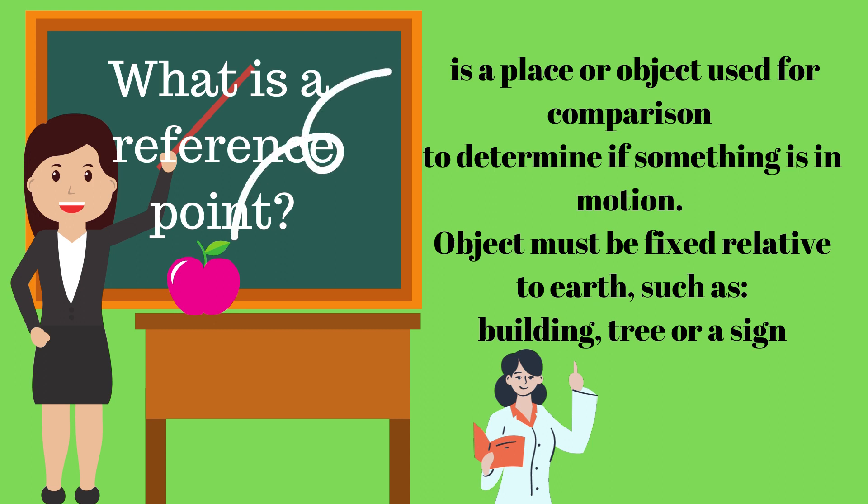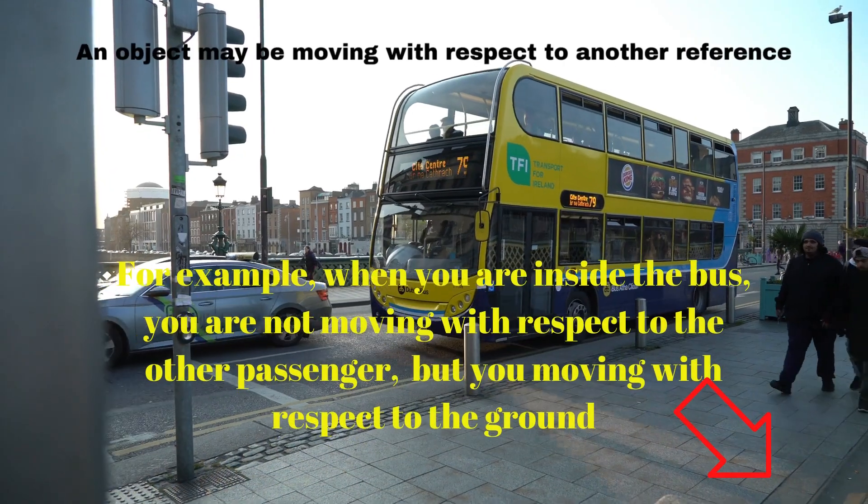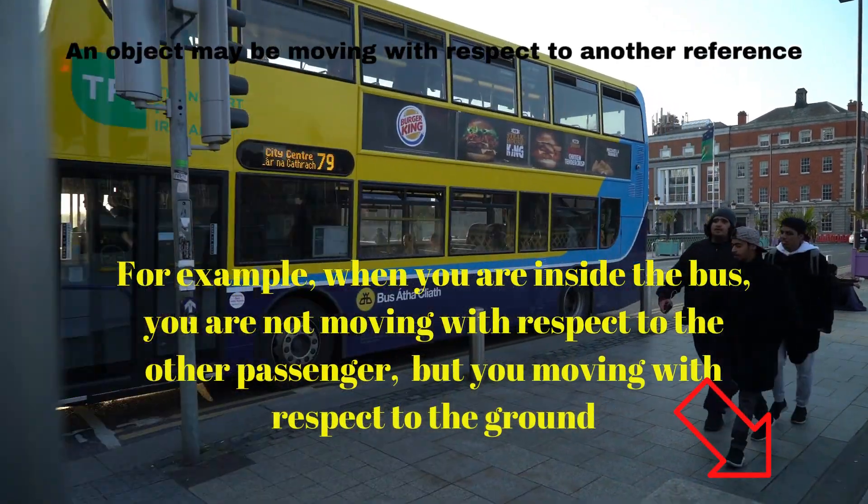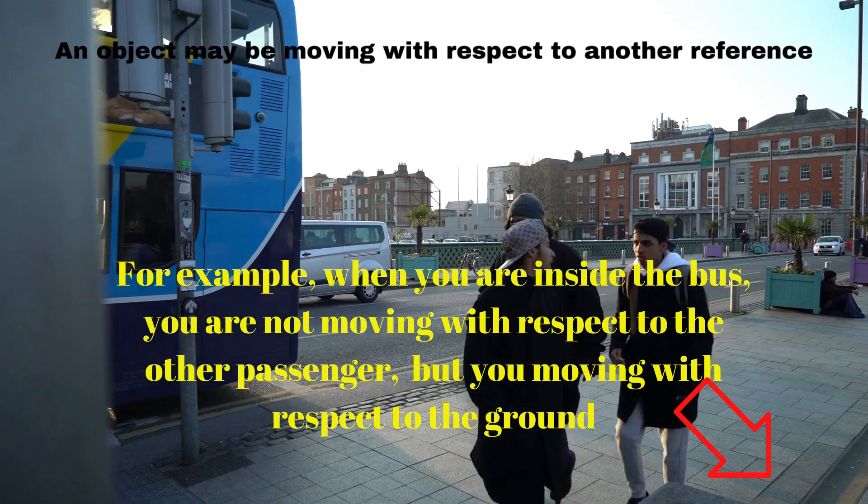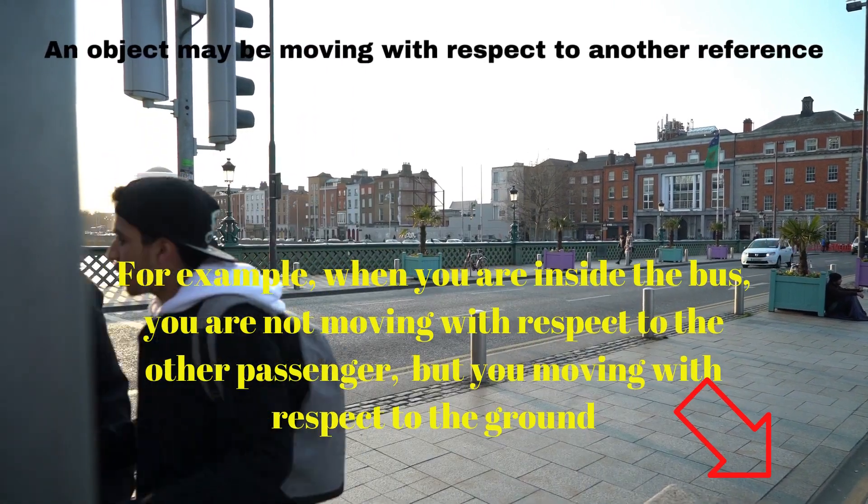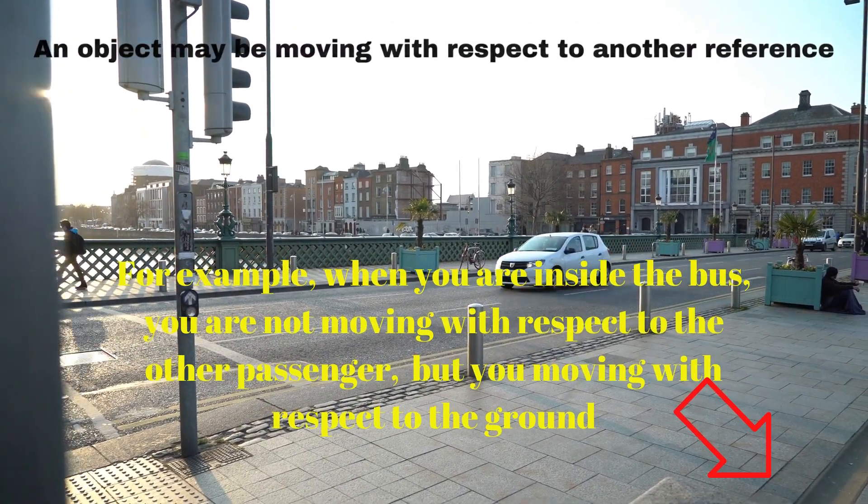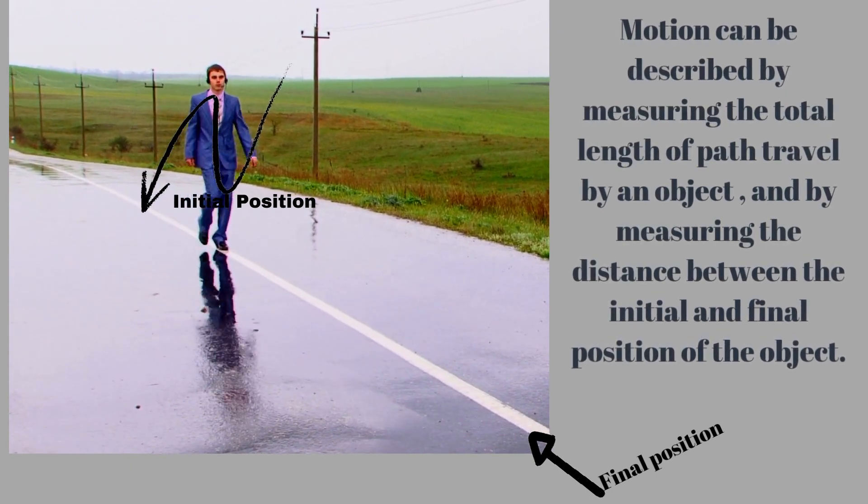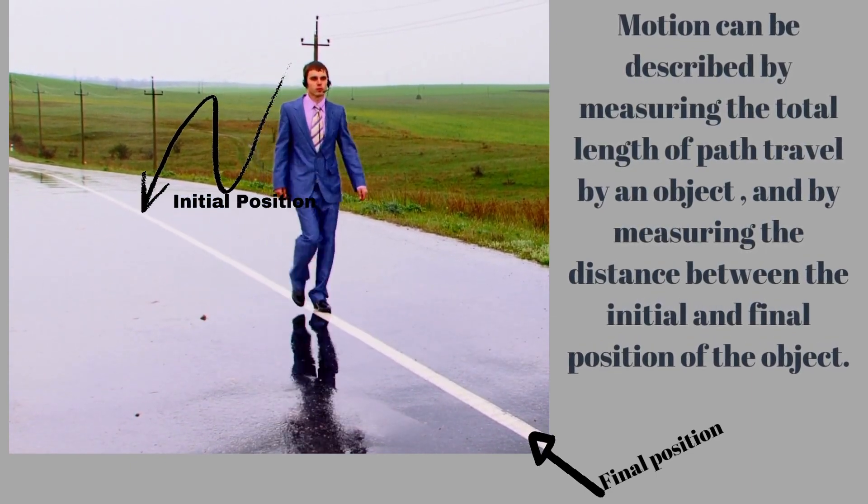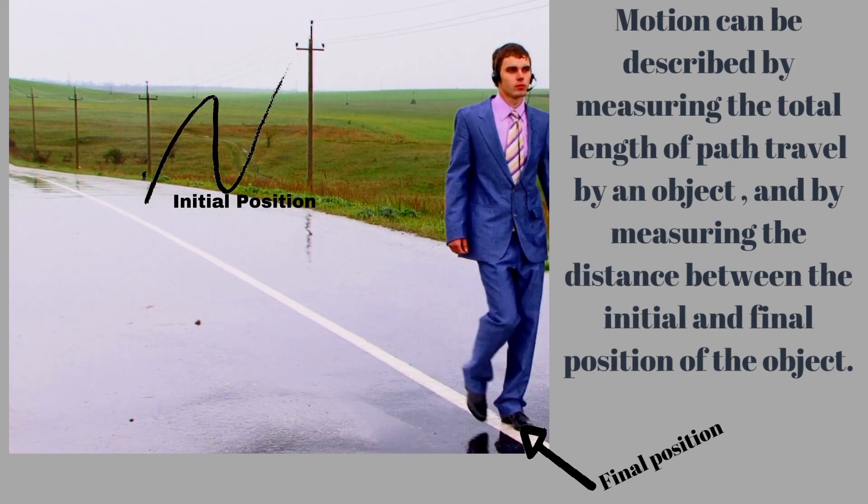The object must be fixed relative to the earth, such as a building, tree, or a sign. An object may be moving with respect to another reference. For example, when you are inside the bus, motion can be described by measuring the total length of path traveled by an object.